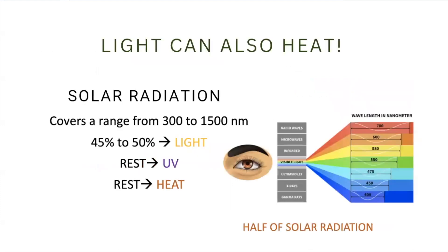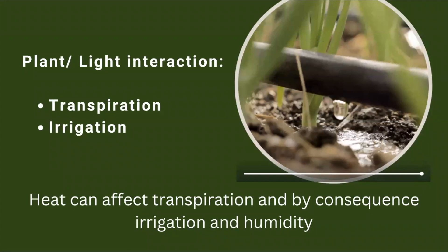We always need to remember that there will always be a portion of light generating heat. For example, solar radiation covers a big range from 300 to 1500 nanometers, and only about 45 to 50 percent is light — the rest includes heat. This is why shade cloths and specific products can be used to reduce radiation from the sun inside greenhouses. When radiation increases, leaf temperature also increases, affecting transpiration rate — if we increase transpiration, our plant will be taking more water.